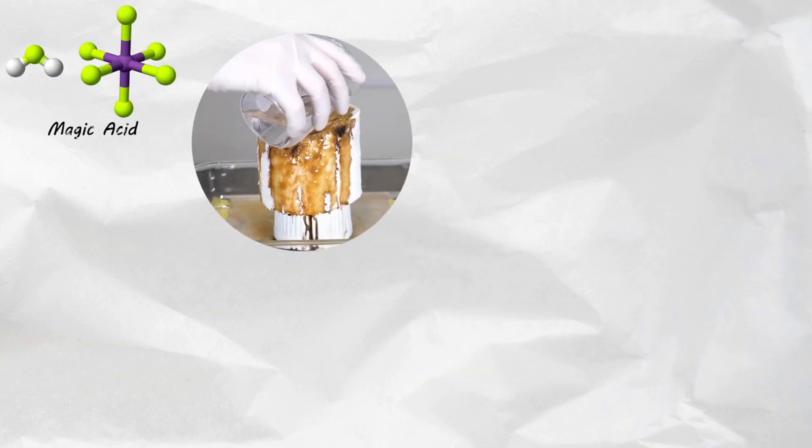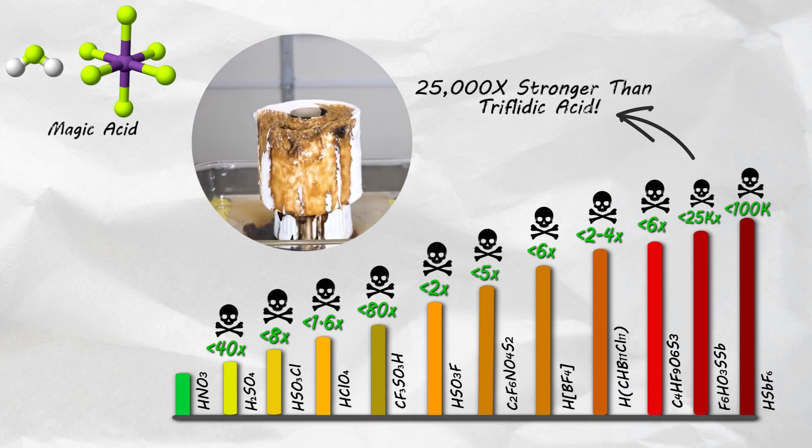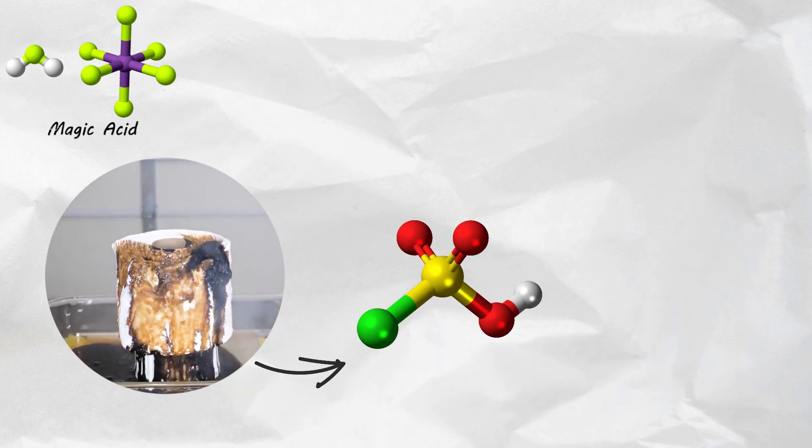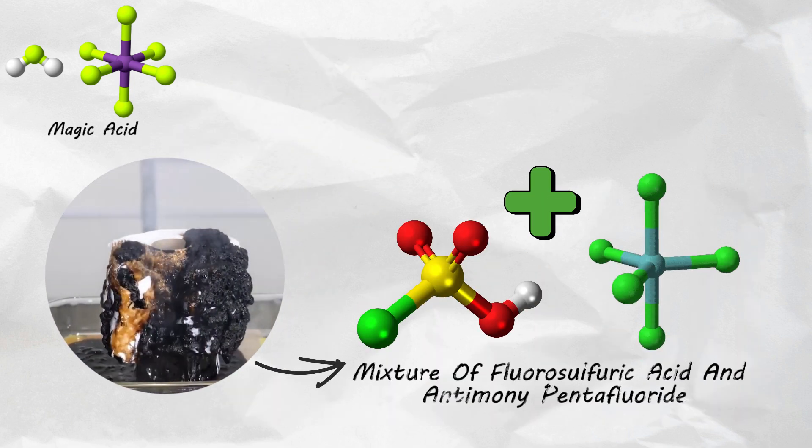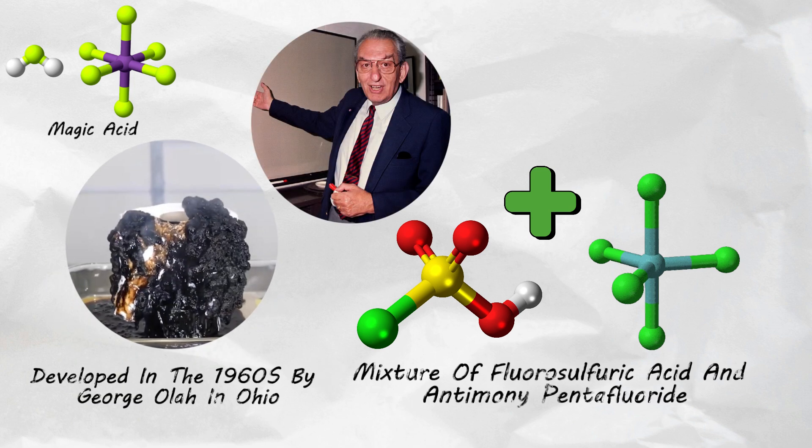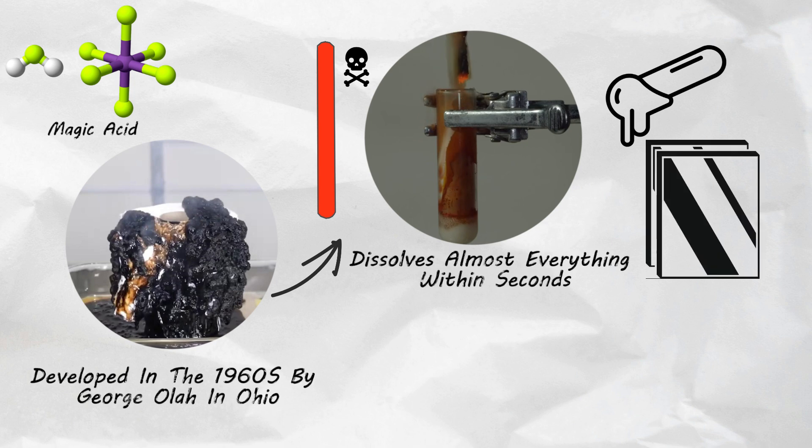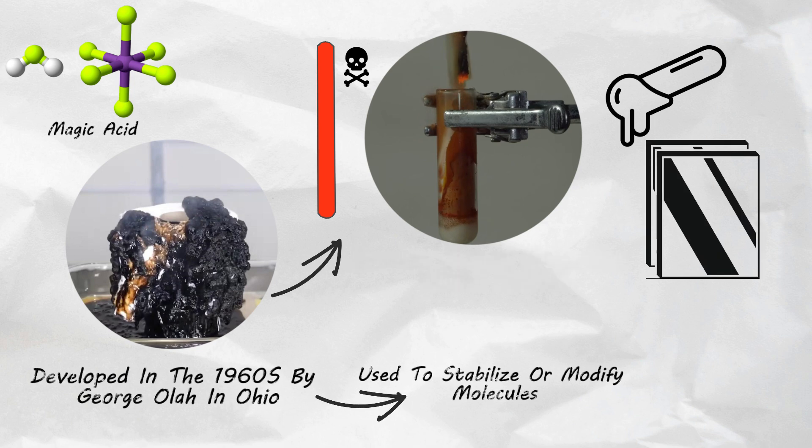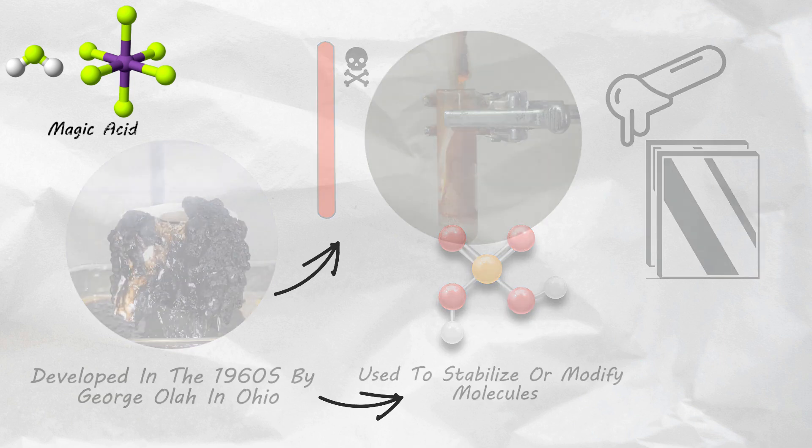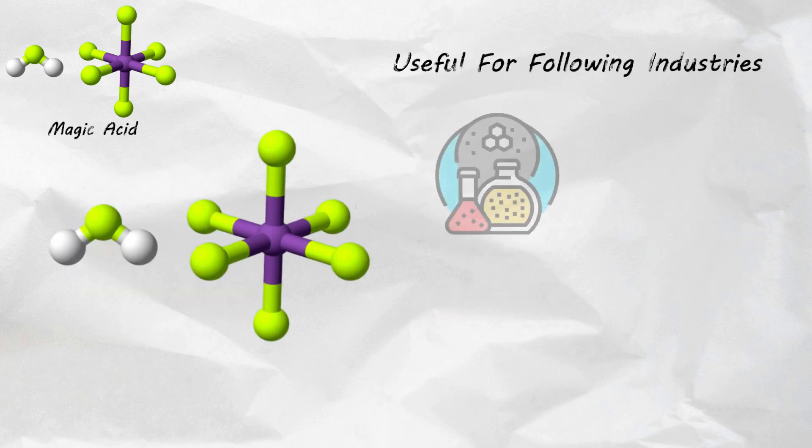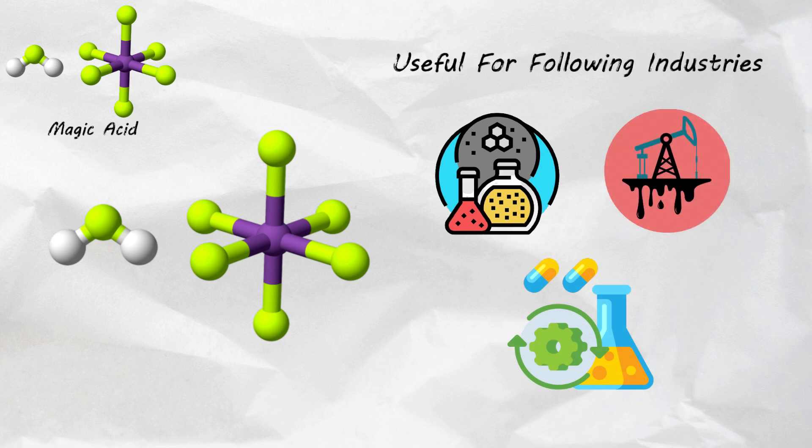Magic acid. Now it's getting serious guys. This stuff is approximately 25,000 times stronger than triflitic acid. Magic acid is a mixture of fluorosulfuric acid and antimony pentafluoride. It was developed in the 1960s by the Hungarian-American George Olah in Ohio. This potent substance dissolves almost everything within seconds, even glass and paraffin. Magic acid is primarily used to stabilize or change certain molecules. This is useful for industries like specialty chemicals, pharmaceuticals, or the production of fuels.